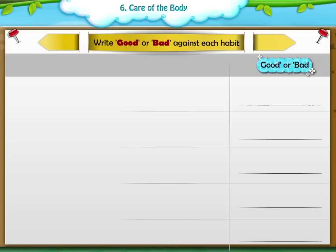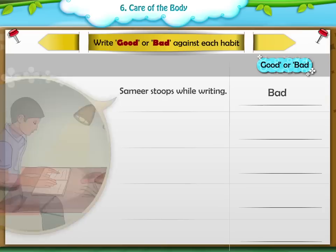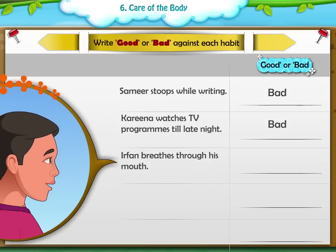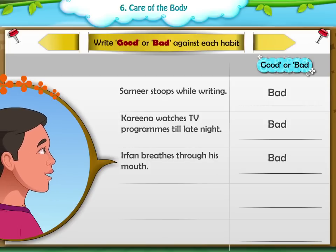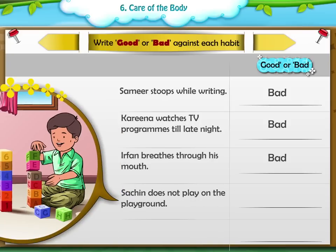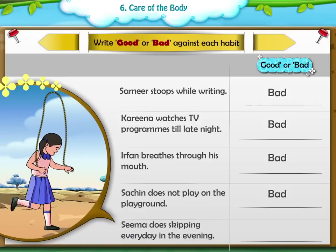Write good or bad against each habit. Sameer stoops while writing — Bad. Kareena watches TV programs till late night — Bad. Irfan breathes through his mouth — Bad. Sachin does not play on the playground — Bad. Seema does skipping every day in the evening — Good.